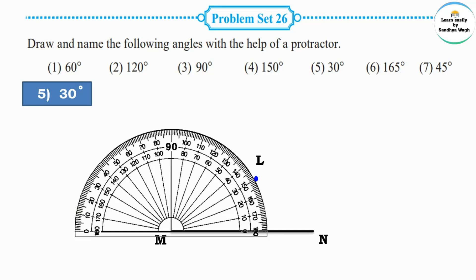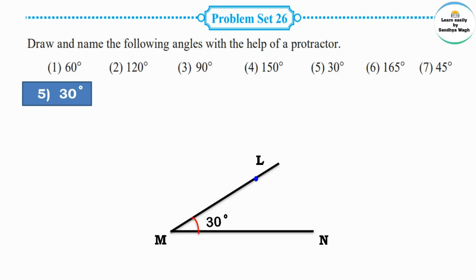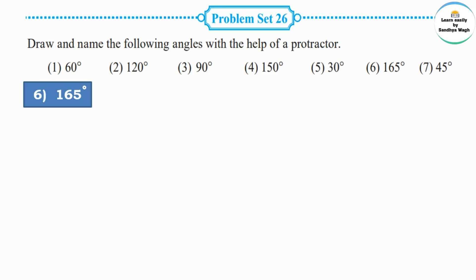Name that point L. Now with the help of a ruler, join point M and point L. The 30 degree angle is ready. The angle name is LMN. M is the vertex, and ML and MN are the arms of this angle.